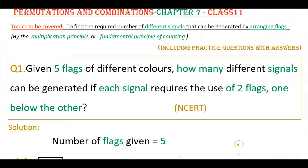Hello everyone. Today I am going to explain how to find the required number of different signals that can be generated by arranging flags, using the multiplication principle or fundamental principle of counting. Given five flags of different colors, how many different signals can be generated if each signal requires the use of two flags, one below the other?